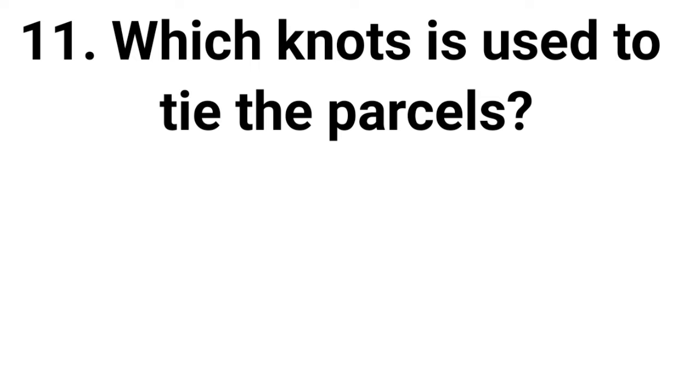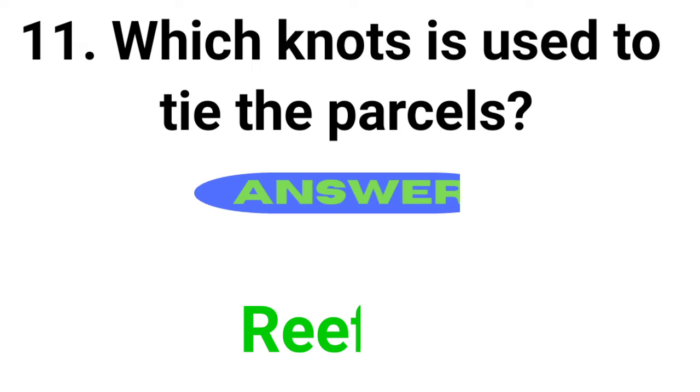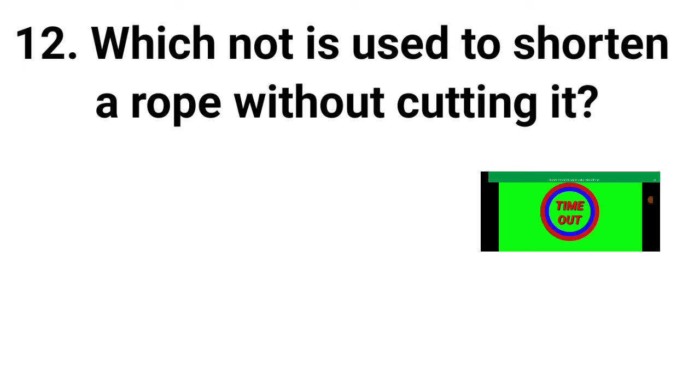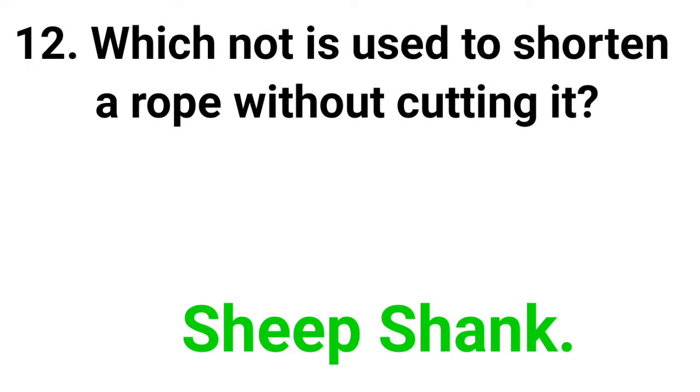Question 11: Which knot is used to shorten a rope without cutting it? Answer is Sheep shank.